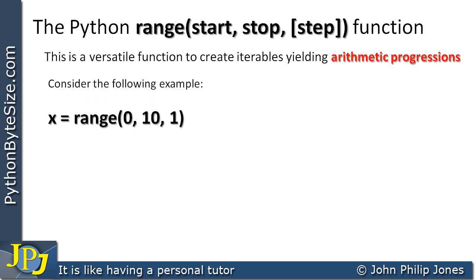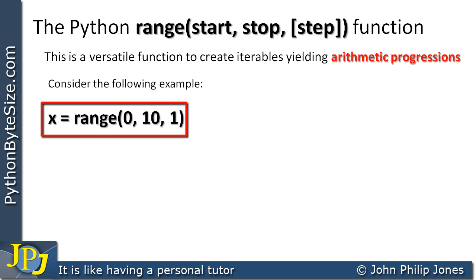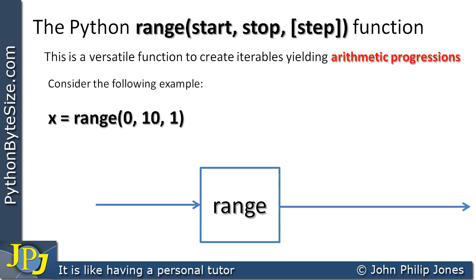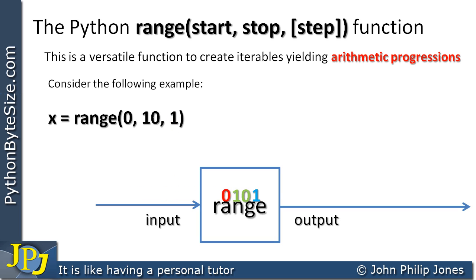I like to think of functions through an example. Here x is assigned range(0, 10, 1), where the arguments are appropriately separated by commas. The 0 is the start, the 10 is the stop, and the 1 is the step. A good way to think of a function is schematically — range appears in a box with an input and an output. It's a process: we give it input, it works with that input, and produces an output. The inputs are 0 (start), 10 (stop), and 1 (step), and the function produces an arithmetic series.